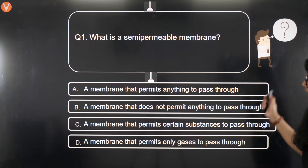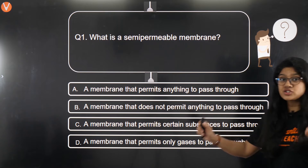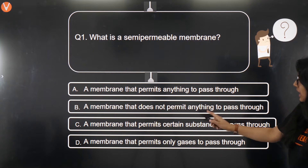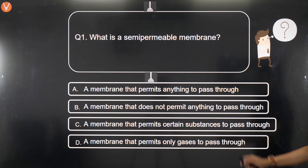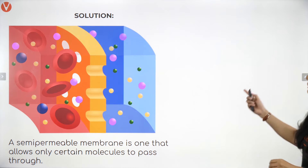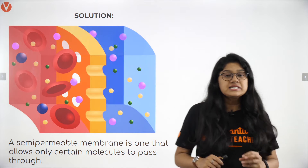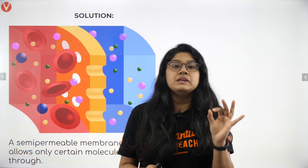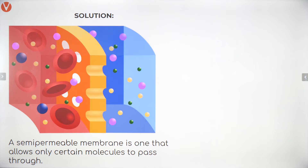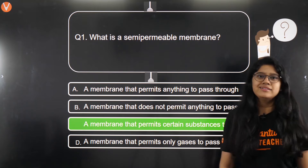This question will be coming up as an MCQ and you can pick the right answer. A membrane that permits anything to pass through — no, we said selectively permeable. A membrane that does not permit anything to pass through. A membrane that permits certain substances to pass through, or a membrane that permits only gases to pass through. The right option is: a semi-permeable membrane is a membrane that allows certain molecules to pass through — also called a selectively permeable membrane. The answer is option number C.